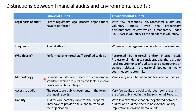For methodology: financial audits are based on comparative standards which are publicly known, such as general principles of accounting. Environmental audits must follow ISO 14000 guidelines, but strictness varies from organization to organization depending on how strictly the auditor is following them. For access to audit results: financial audit results are public documents in the form of annual reports. Very few environmental audits are public, although some results are often published in environmental reports if the company chooses — it is the company's decision.